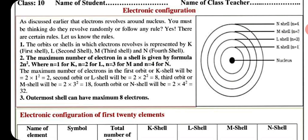The maximum number of electrons in a shell is given by formula 2N square. This N is 1 for K first shell, 2 for L second shell. If this shell is the number of shell, then N is equal to 3 for M, N is equal to 4 for N.